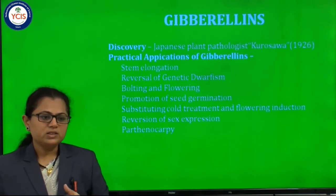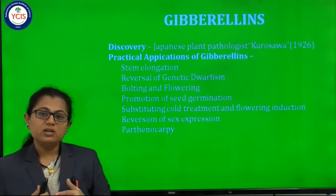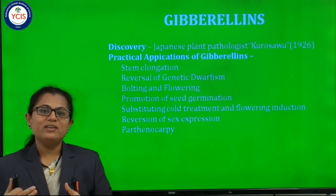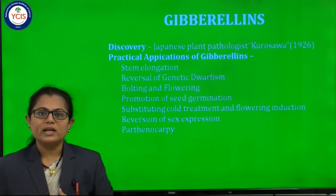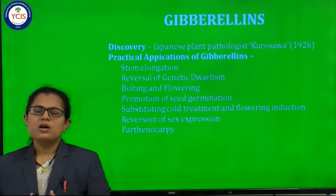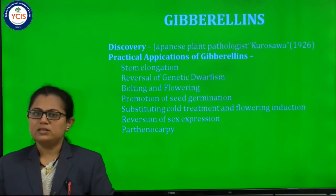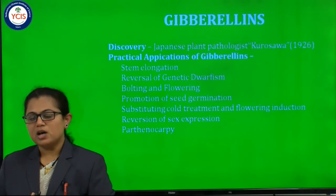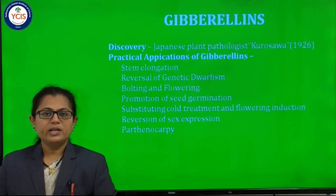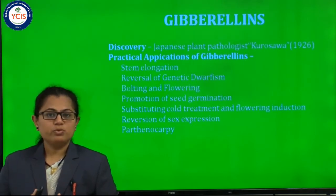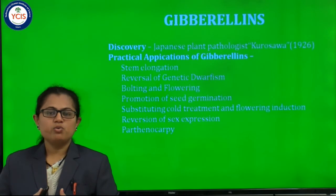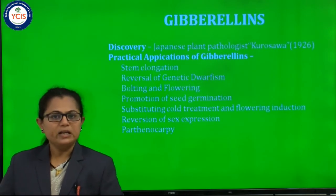In some plants we need a greater number of fruits and flowers. At that time we can increase the number of flowers on the plant by using gibberellin treatment. And lastly, parthenocarpy. Like auxin, gibberellin also shows the important application of parthenocarpy — that is, seedless fruit formation without fertilization. We can also produce that type of fruit by using gibberellin treatment.